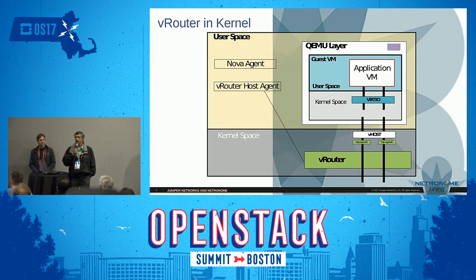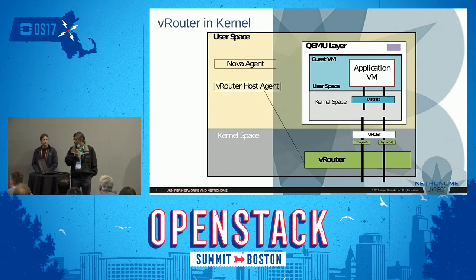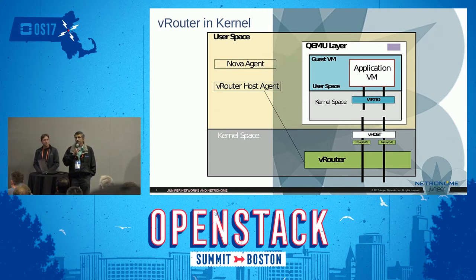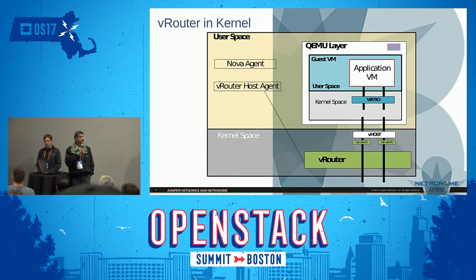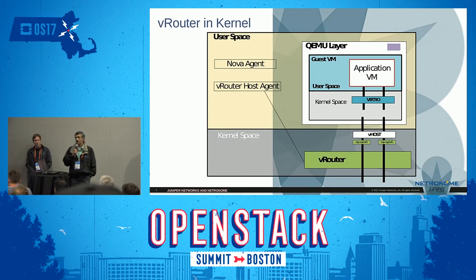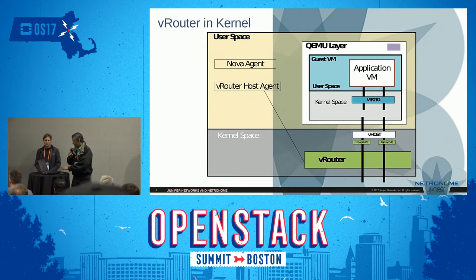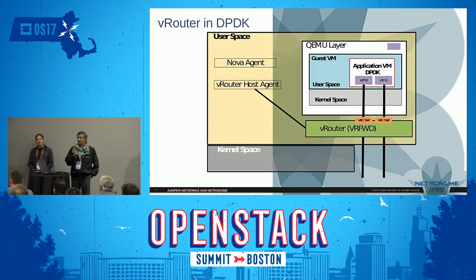On the transmit side, we enabled segmentation offloads. Because most NICs are not able to do it with MPLS, we have to do it in software. Once we did that, we were able to get line rate on a 10 gig link. But for packet processing applications in NFV scenarios, the more important consideration is packets per second. What we found is that with the kernel module, we can only do about half a million packets per second between two VMs running on different servers. So that was our motivation for integrating VRouter with DPDK.